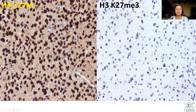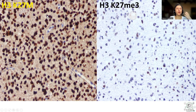For the H3K27M, the presence of an altered status of the tumor would imply positive nuclear staining in the tumor cells, in the presence of a negative internal control in the endothelium, for example. So the capital M — the mutant — has to show positive nuclear staining in the presence of a negative internal control.